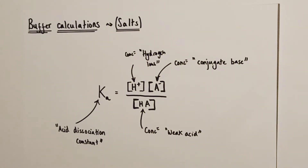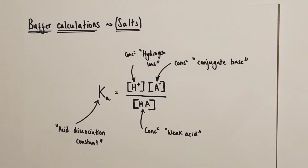I'm going to take you through two different calculations involving buffer solutions. The first is how to calculate the pH of a buffer. I'll show you how to rearrange the Ka expression to find that value, and then take you through a model example with data provided to show you how to accurately calculate the pH of a buffer to two decimal places.